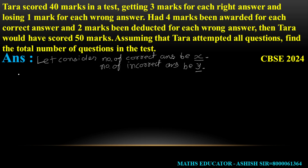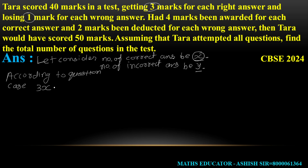According to the question, Case 1 के अंदर: Correct Answer के 3 marks मिलेंगे, Incorrect का minus 1 होगा। तो Correct Answer के marks = 3X, और Incorrect Answer के marks = 1×Y। तो 3X - Y = 40। यह Equation 1 बन गया।